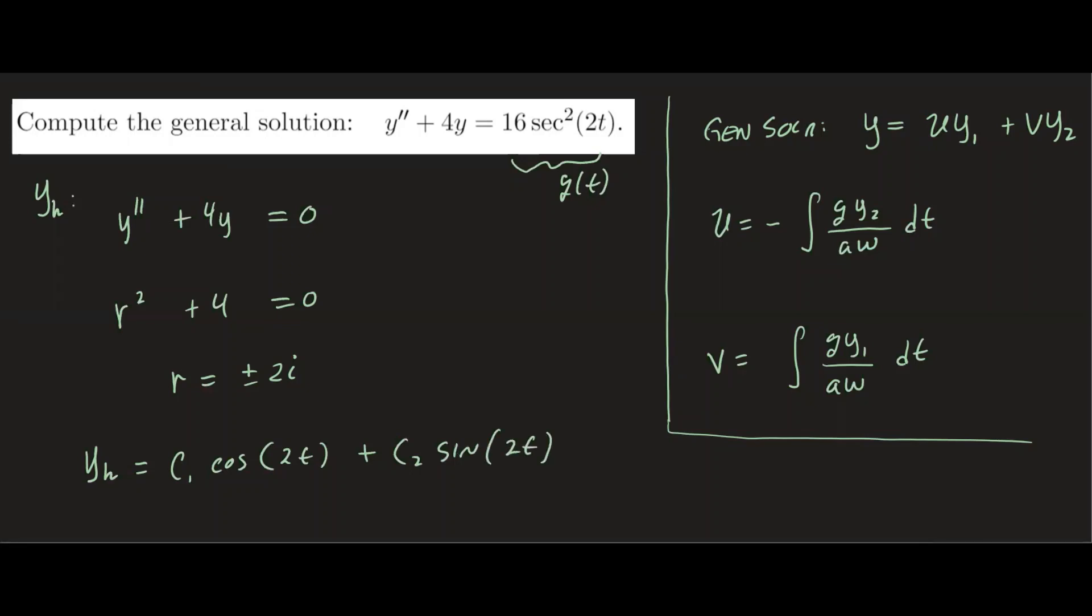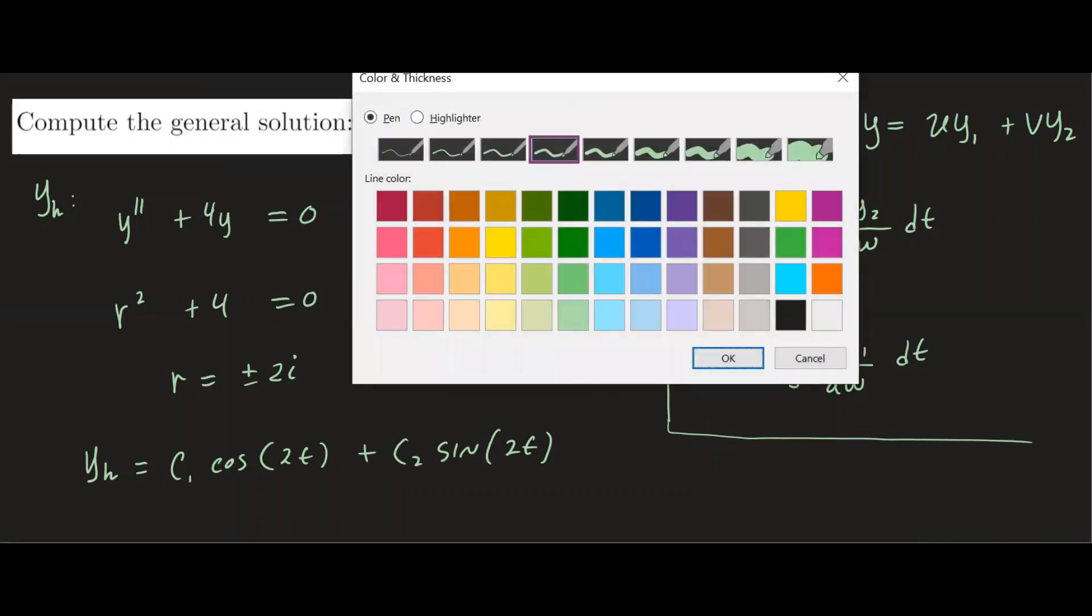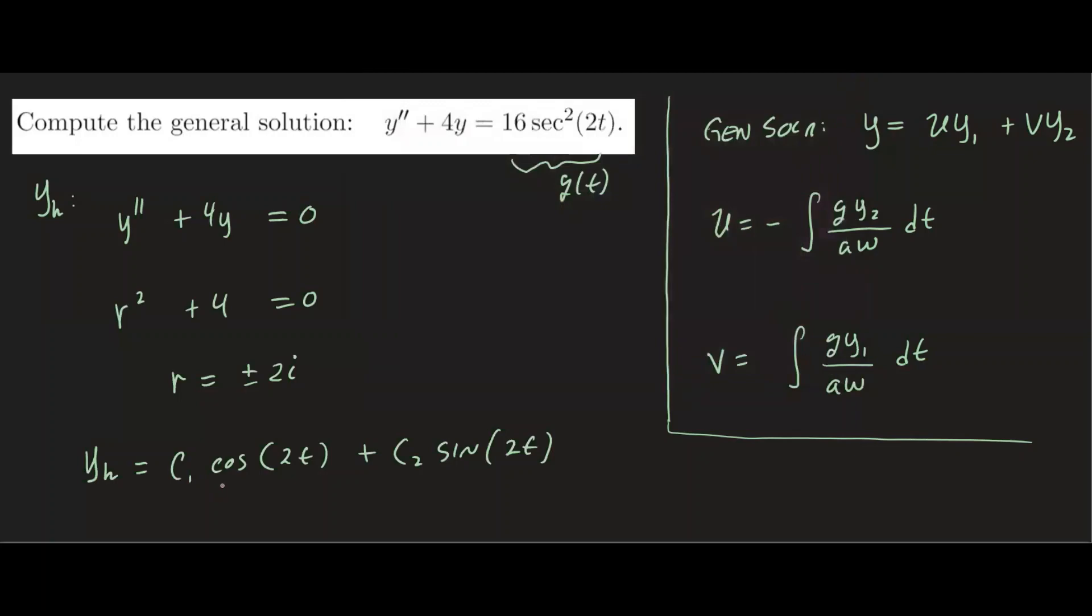So c1 cosine of 2t plus c2 sine of 2t. So we have the homogeneous solution. Now let's go ahead and label which one is y1 and y2. I'm going to choose this function to be called y1, this function to be called y2.